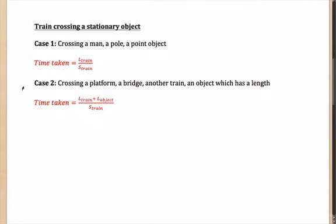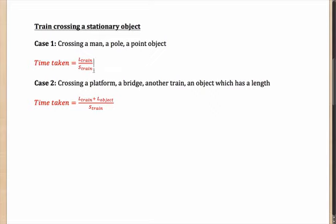To begin with, let us look at the simple case when the train is crossing a stationary object — that means it can be crossing a man, a pole, a deer, or something which can be considered a point object. In that case, the time taken for the train to cross is the length of the train divided by the speed of the train. To cross a point object, the distance the train covers is just its own length, at the speed at which it is running. So the formula is: time = length of the train divided by speed of the train.